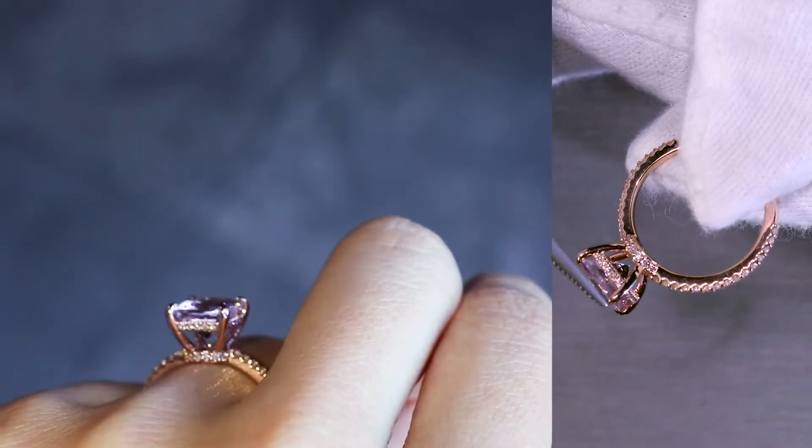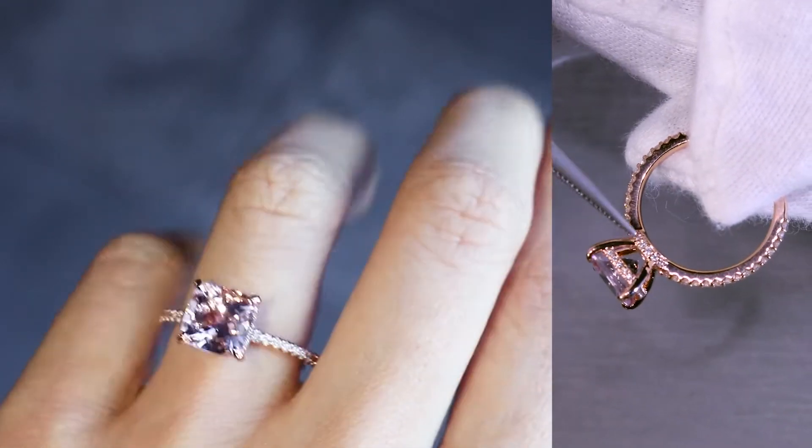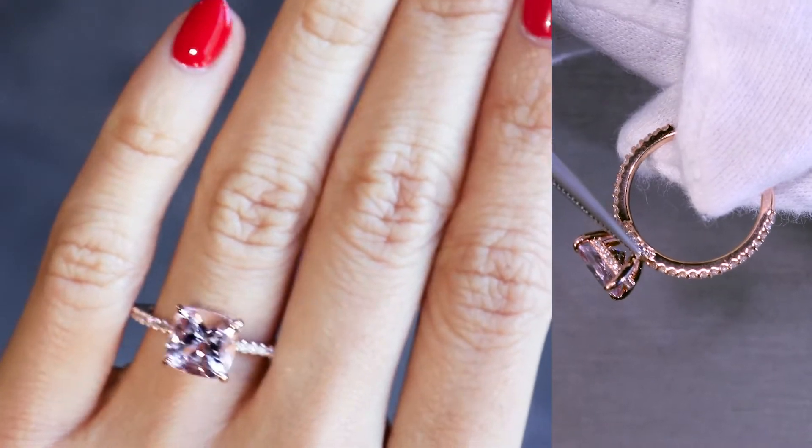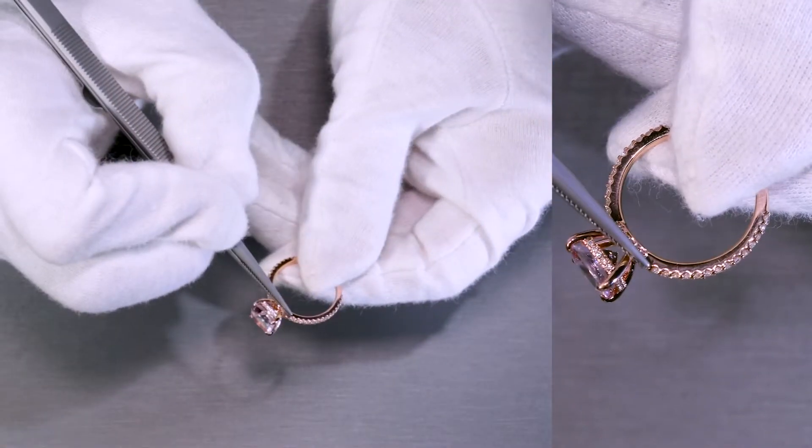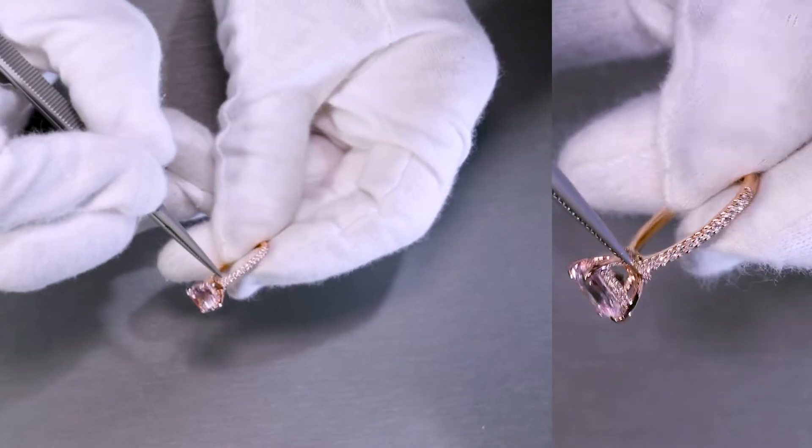And then it's also set on four beautiful prongs that meet at the bottom where the diamond collar is. And this is a beautiful diamond shank.